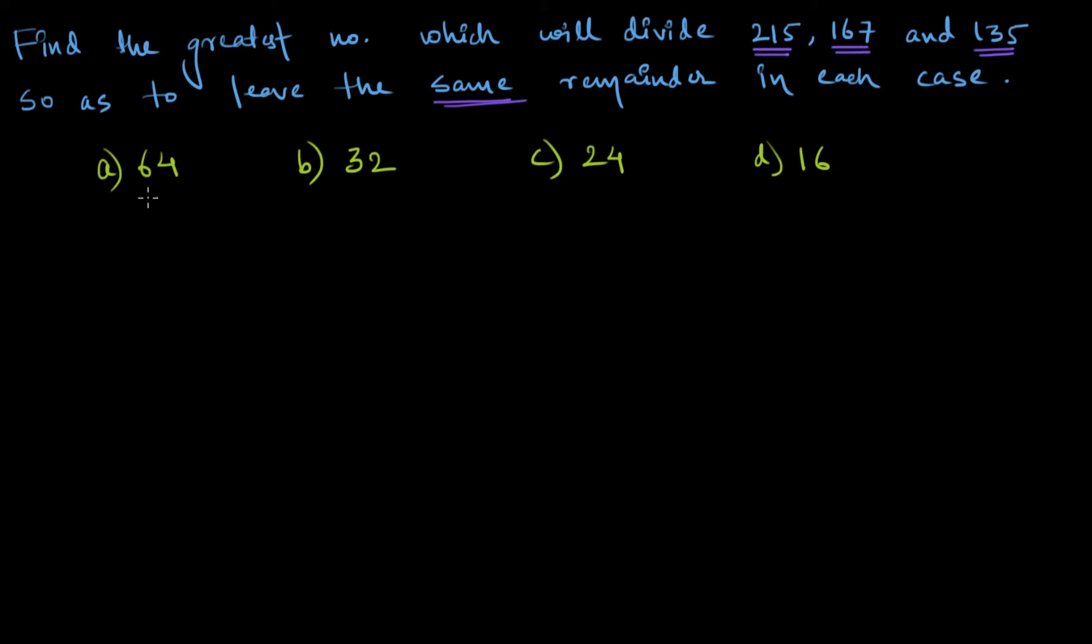Let's start with 64. 64 cannot be the answer. Reason, because I know that 64, 2×8=12, so 2×64=128. 128 is very close enough to 135. So if I divide 135 by 64, I'll get a small remainder, small remainder.